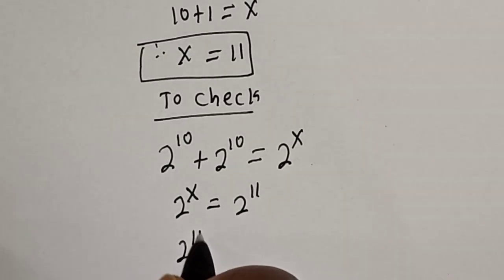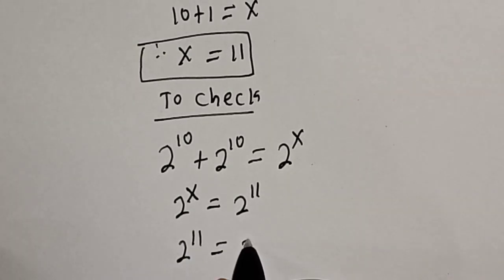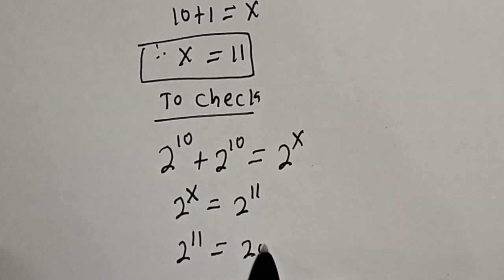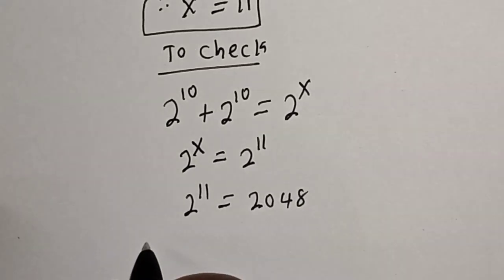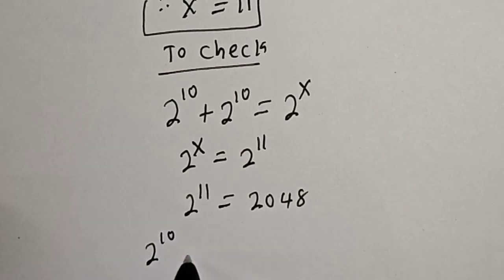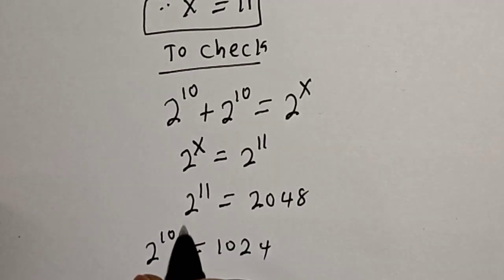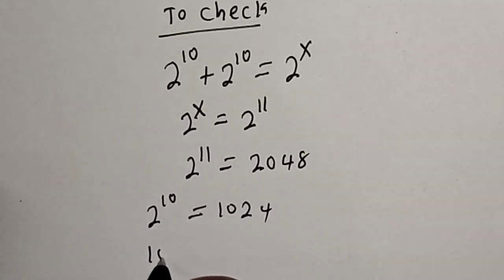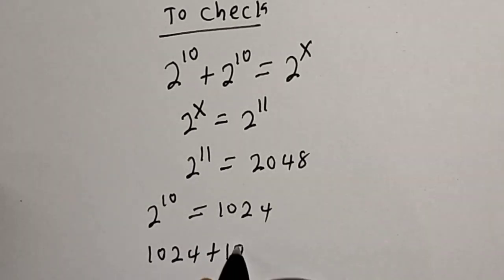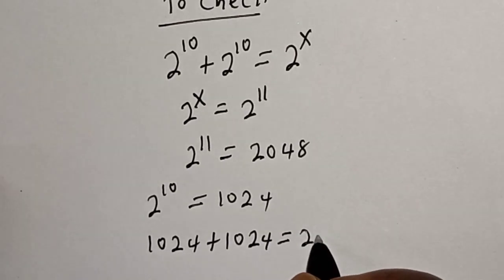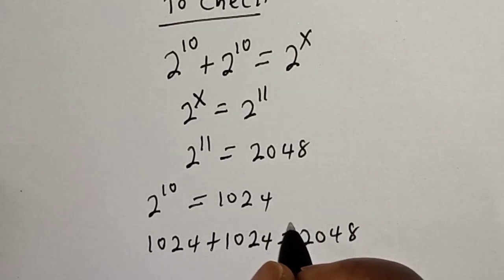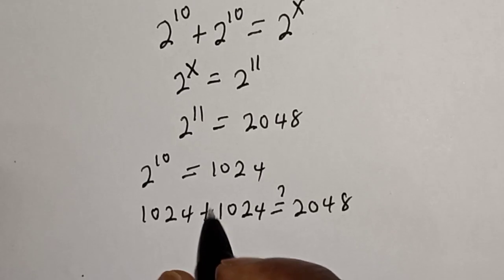Now 2 raised to power 11 is equal to 2048, and 2 raised to power 10 is equal to 1024. Let's substitute: we have 1024 plus 1024 must be equal to 2048.